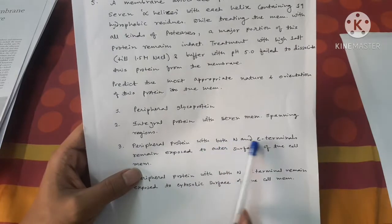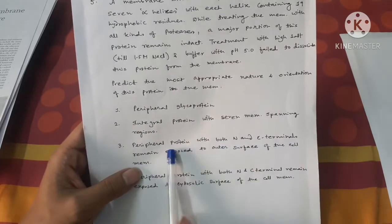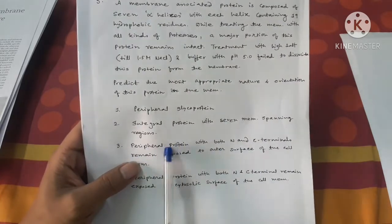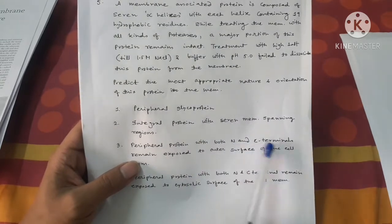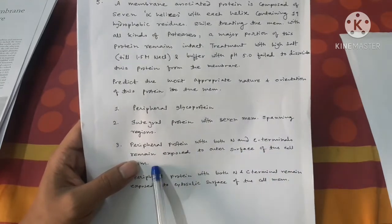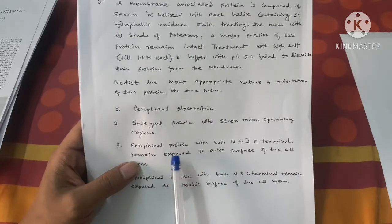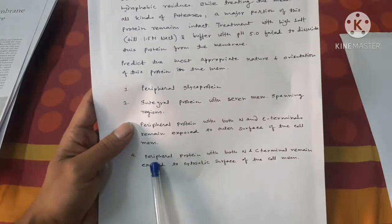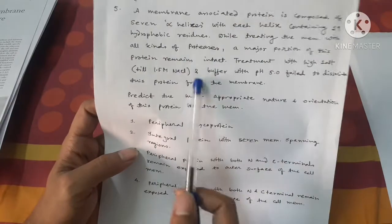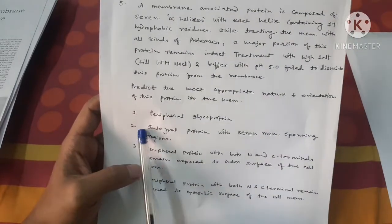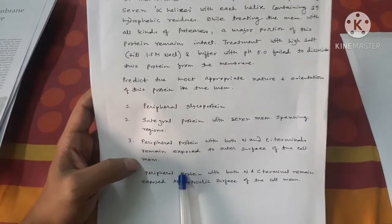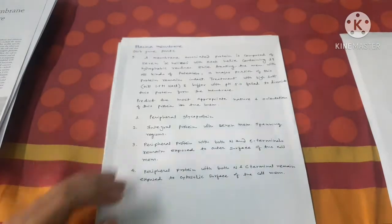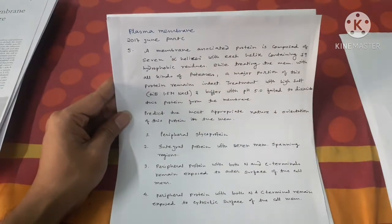The option of a peripheral protein with both N and C terminals exposed on the outer surface is logically incorrect, because peripheral proteins can be extracted by high-salt treatment regardless of terminal orientation. Similarly, the other peripheral protein options are false. So option two — integral protein with seven membrane-spanning regions — is the only correct answer for this 2017 plasma membrane question.